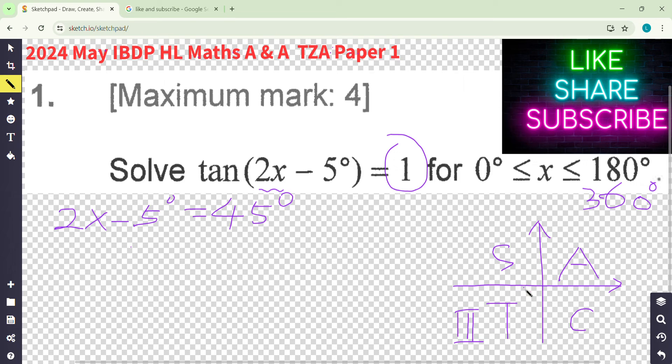So here is the second solution. What is the result? It should be 180 plus 45, which equals 225 degrees.